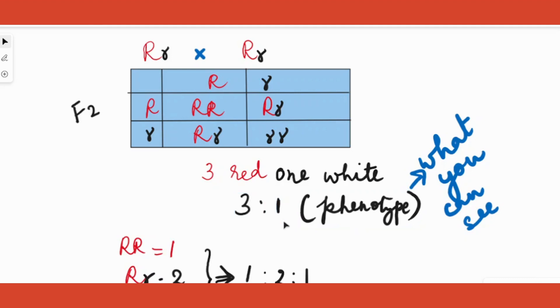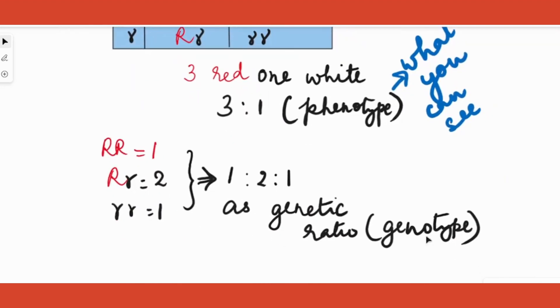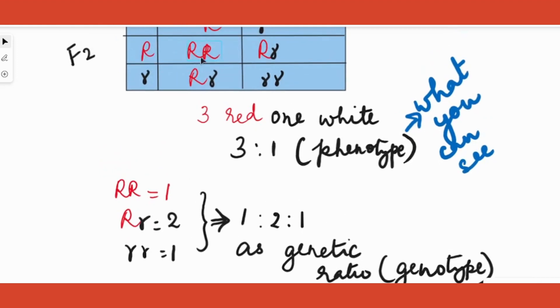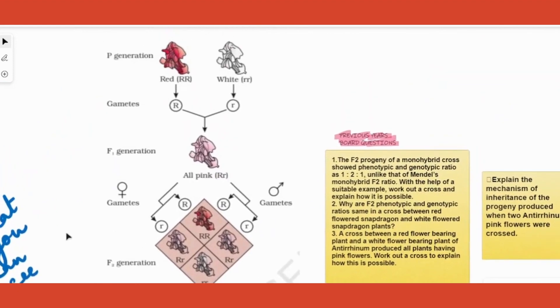Phenotype means when you look at it, what do you see? That is called phenotype. So we get the ratio three is to one. And when you look at genetically, how they are - genetic makeup otherwise called as a genotype - you would get a ratio one is to two is to one. That is capital R and R would come only once, capital R small r would come twice, and small r small r would come once. So that is why we got this ratio - that is Mendelian genetics. Now this is a scenario called as incomplete dominance.